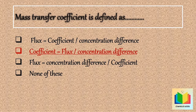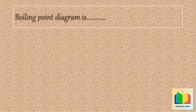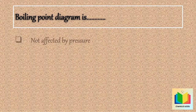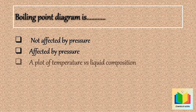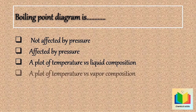Now next question: Boiling point diagram is. (A) Not affected by pressure. (B) Affected by pressure. (C) A plot of temperature versus liquid composition. (D) A plot of temperature versus vapor composition. Your time starts now.